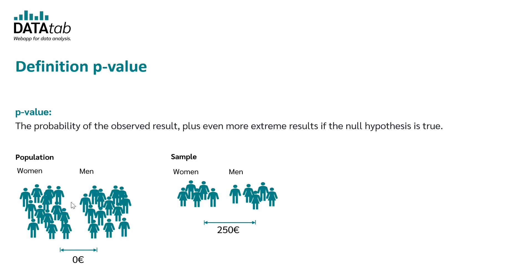This means that we have no difference between men and women in the population regarding their salary. And the p-value now gives us the probability that we draw a sample where the salary of men and women differs by more than 250 euros, although there is no difference in the population.